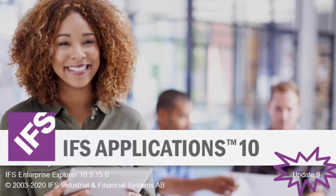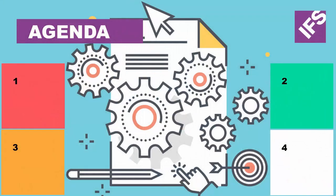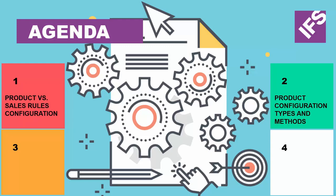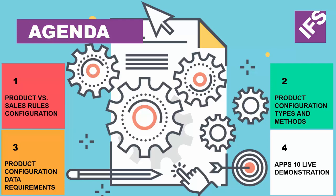For those already on Apps 10 in ARENA, the functionality you see today and more is available in that user experience. After explaining some terminology, I'll contrast product configuration with sales rules configuration, explain the different types of product configuration and configuration methods, review all the data elements required to set up the product configurator, and do a live demo in Apps 10.